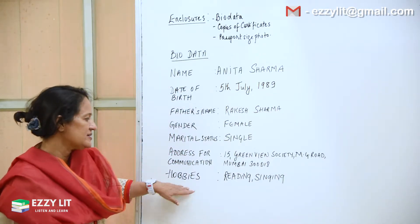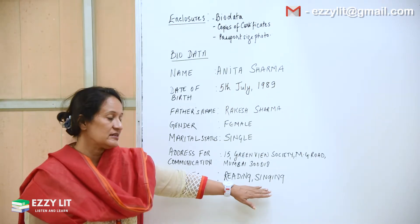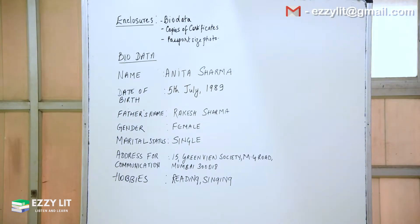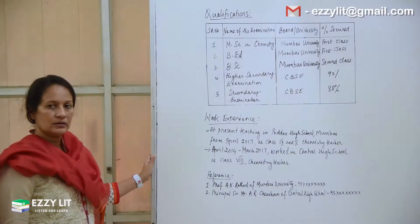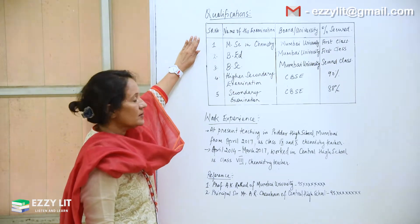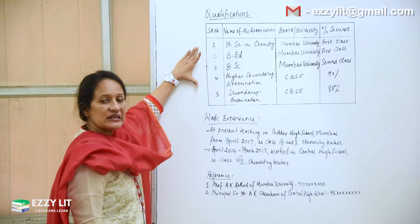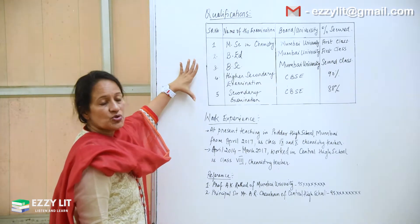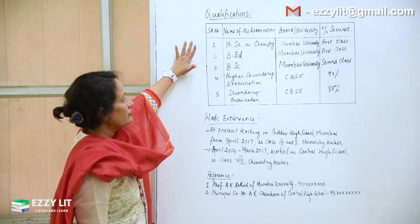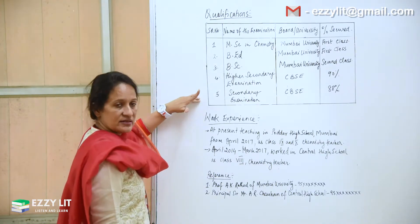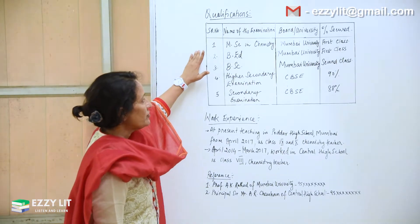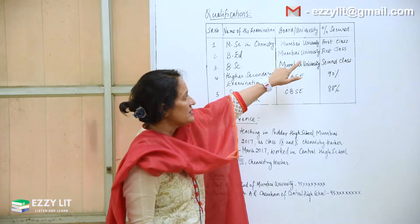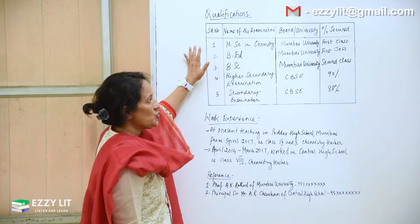Hobbies can include reading, singing, etc. Then comes your qualifications, and this is always presented in a table. It has to start from your present qualification to the past — that is from the highest to the lowest. So you have M.Sc. in Chemistry from Mumbai University, along with your percentage or the class you have secured.